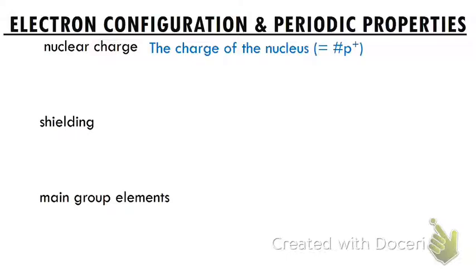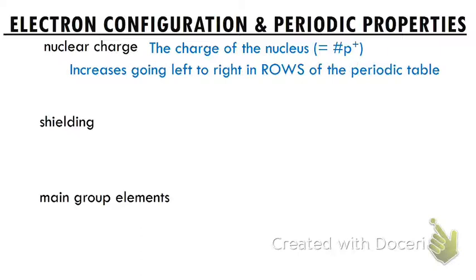Nuclear charge is exactly what it sounds like — the charge of the nucleus. This is going to be equal to the number of protons in our nucleus, because the nucleus has protons and neutrons, but neutrons don't have any charge, so they don't contribute to the nuclear charge. This generally increases going from left to right in the rows of the periodic table, and you can tell because the atomic number increases from left to right, and the atomic number is equal to the number of protons.